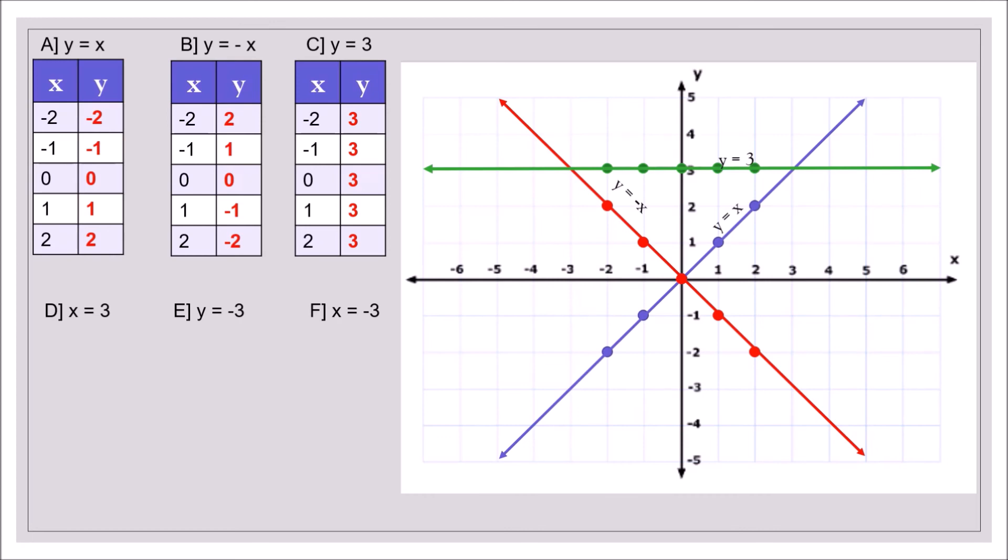The next line, x is equal to 3. So this time, x is always 3 for any value of y. So when y is negative 2, x is 3. When y is negative 1, x is still 3. So this will be the vertical line passing through 3 of the x axis. So that's x equals 3.